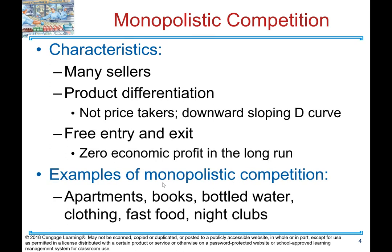What are the characteristics of monopolistic competition? There are many sellers. There is product differentiation — firms are not price takers; they have a downward sloping demand curve. There is free entry and exit, and there is zero economic profit in the long run. Examples of monopolistic competition include apartments, books, bottled water, clothing, fast food, and nightclubs.